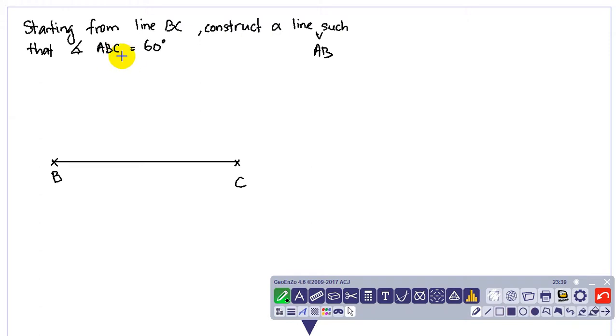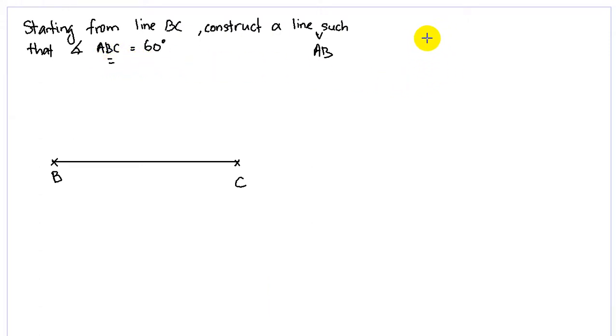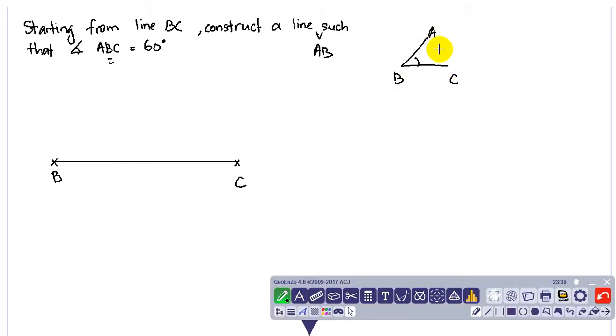ABC means that the angle is actually at B here. So you can just simply sketch a diagram first: A, B, C. We need to construct this line. So BC is given to us first step.